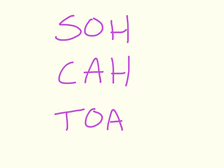Some people like having a mnemonic to remember things. The mnemonic is SOH CAH TOA: Sine is Opposite over Hypotenuse, Cosine is Adjacent over Hypotenuse, and Tangent is Opposite over Adjacent.